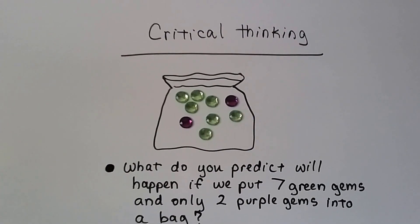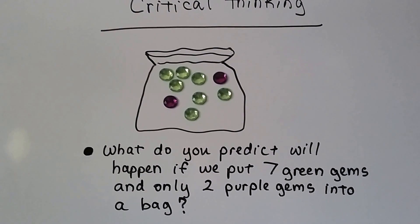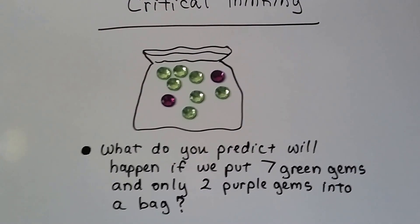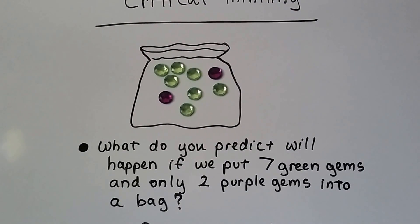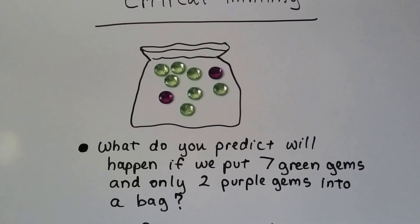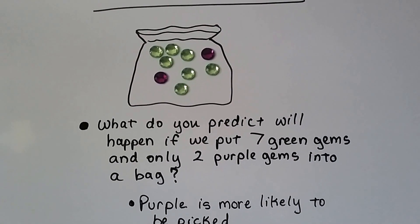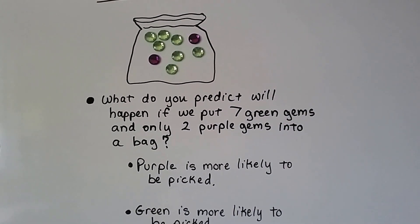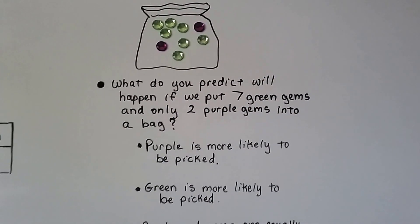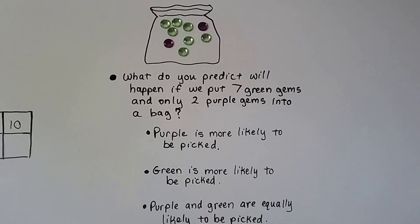Let's try some critical thinking. Look at this bag. What do you predict will happen if we put seven green gems and only two purple gems into the bag? And if we don't look and we stick our hand in to pick a color, do you think purple is more likely to be picked? Do you think green is more likely to be picked? Or do you think purple and green are equally likely to be picked?